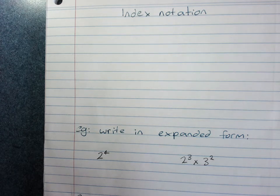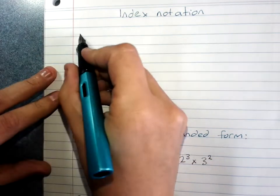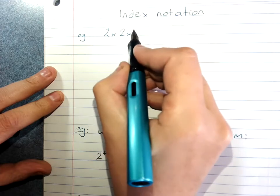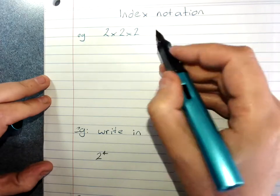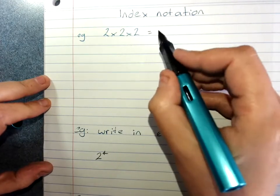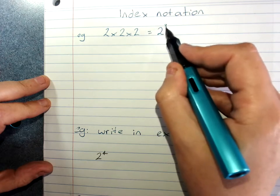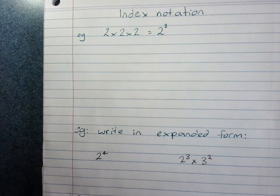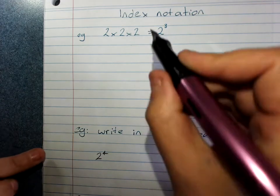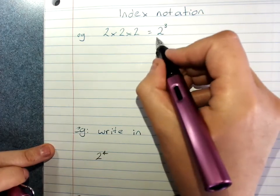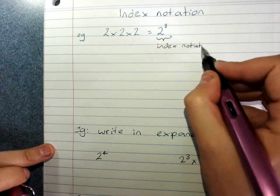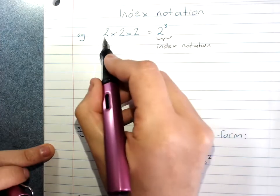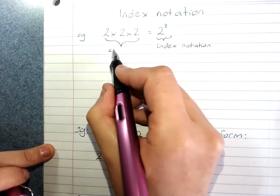Index notation is where we have the same number multiplied together. For example, 2 times 2 times 2 — the same number multiplied by itself. Instead of writing it all out like that, we can write it as 2 to the power of 3. This is a power, and it is written in index form or index notation. When we write the sum out like this instead, this is expanded form.